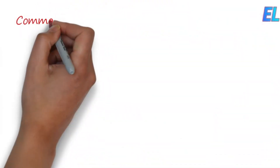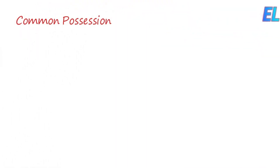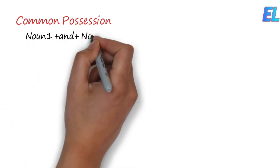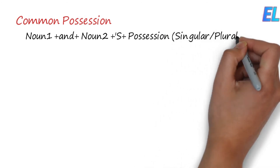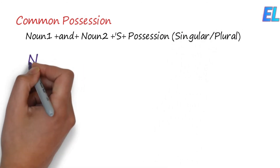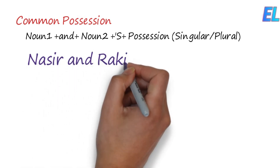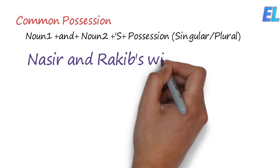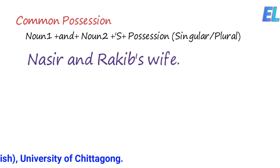We need to avoid common possession. Common possession relates to the position of singular or plural nouns. For example, Naseer and Rakeef's wife — Naseer and Rakeef share the apostrophe-S. Two words sharing one apostrophe-S in the possessive position.